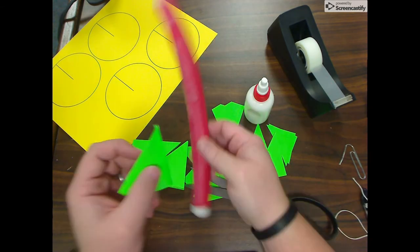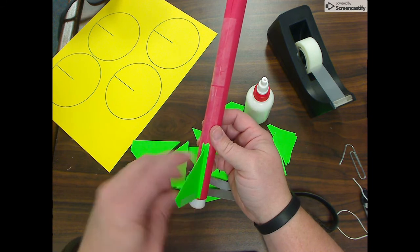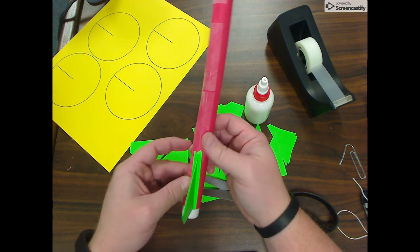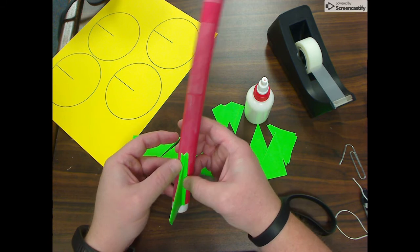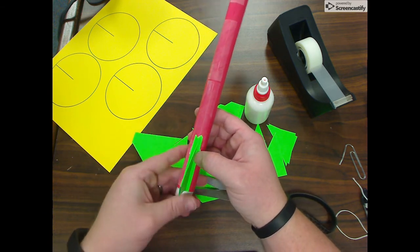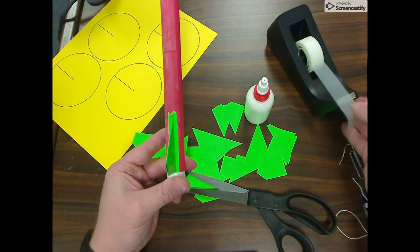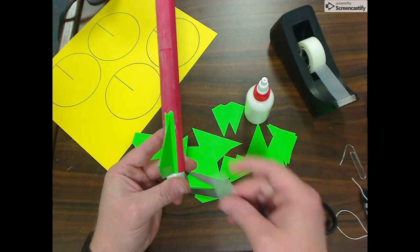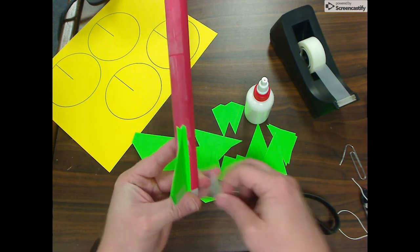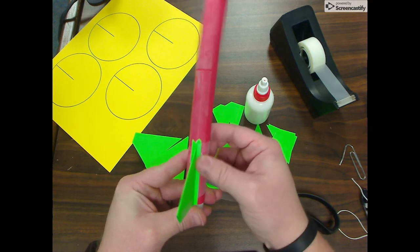And then I'm going to start right where we put the tape and I'm going to line it up with the very bottom of the rocket because I want it to help my rocket stand up. If you want to give it some extra reinforcement, grab a piece of tape and tape your fins down just like that.